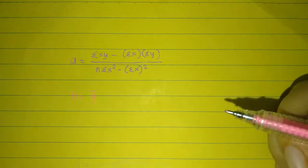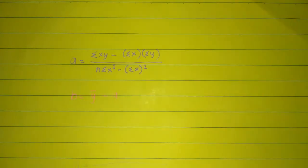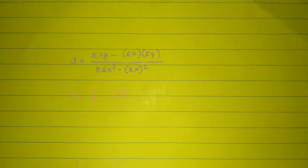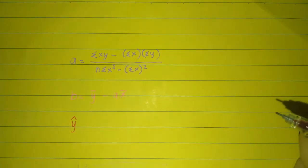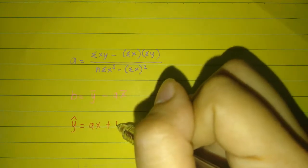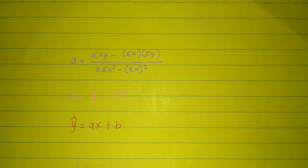The next formula is: b is equal to the average of y minus a multiplied by the average of x. The last formula for the least squares line is: y is equal to a multiplied by x plus b.